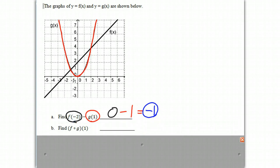In our second example, we're going to find f circle g of 1. And we might remember that f circle g of 1 really means f of g of 1.